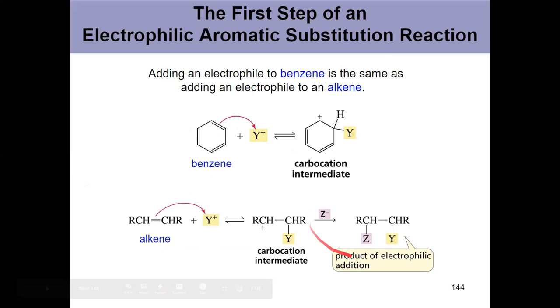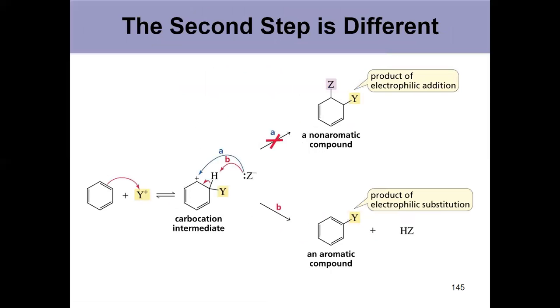But then after that, I don't add a nucleophile and end in an addition reaction. Because while that carbocation intermediate is more stable than other carbocation ions because of the delocalized electrons, we want to get that aromaticity back because there's inherent stability there.